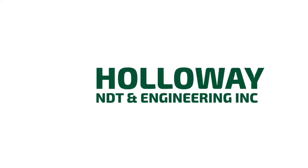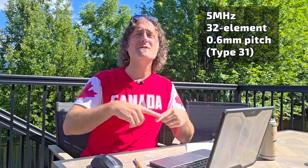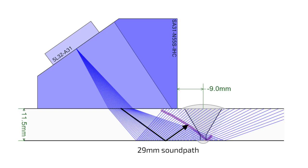Welcome to video number 100. Today I'm going to use Omni PC to screen a weld file for flaws. The weld we're going to do is a single V, 11.5 millimeters thick, so it's a little bit of an oddball. We're going to use a 5 megahertz 32 element probe with a 0.6 millimeter pitch — that is a type 31 or A31 transducer. We'll use 40 to 70 degrees with a one degree increment, and we're going to focus at a sound path or half path of 29 millimeters.